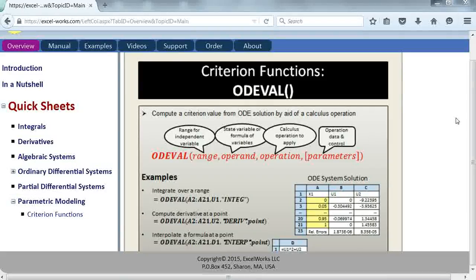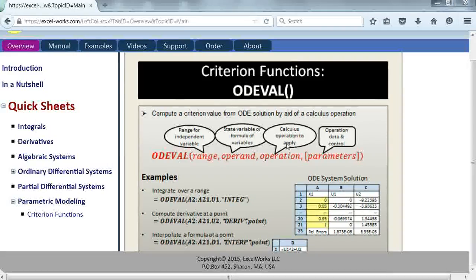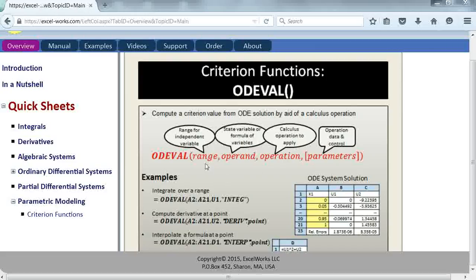The second criterion function that we can use is called ODEval. This function applies to output of IVsolve and BVsolve for ordinary differential systems. It uses a calculus operation to compute a quantity from the solution. Basically, we pass the range for the independent variable, which is always in column 1, and then the operand for the calculus operation. Generally, this is either a state variable like U1, U2, or a formula implicating either of those.